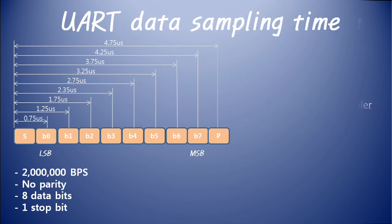Baud rate simply means the time required to output 1 bit when UART communication is performed. No matter what baud rate is used for UART communication, it is only necessary that the communication terminals use the same baud rate, the same number of data bits, the use of parity bits, and the number of stop bits.